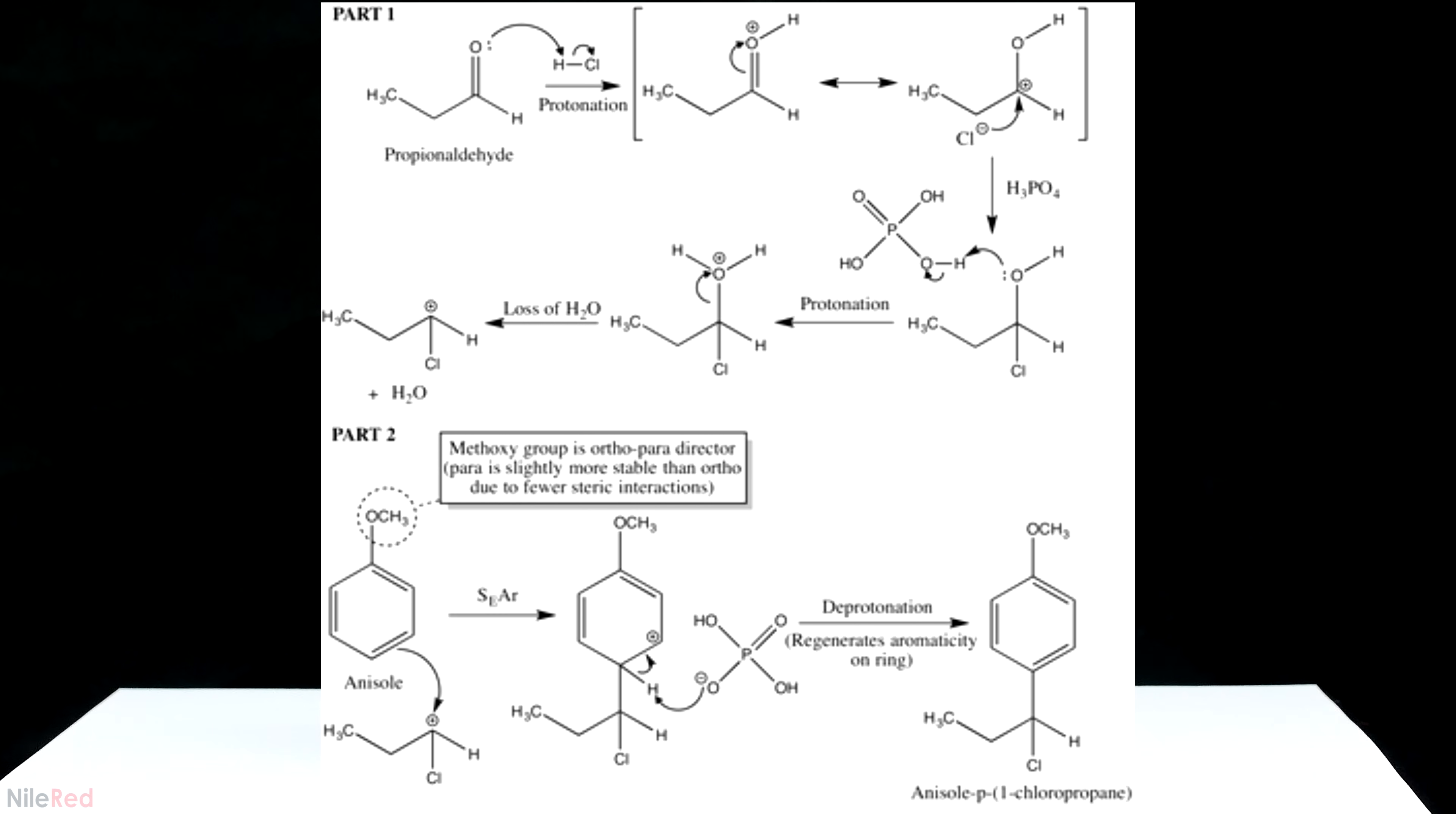Like the other mechanism, this one also starts with the protonation of the aldehyde. In this case however, we get an attack by the chlorine and the formation of an alkyl halide. The alcohol is then protonated, and it leaves to form a carbocation.